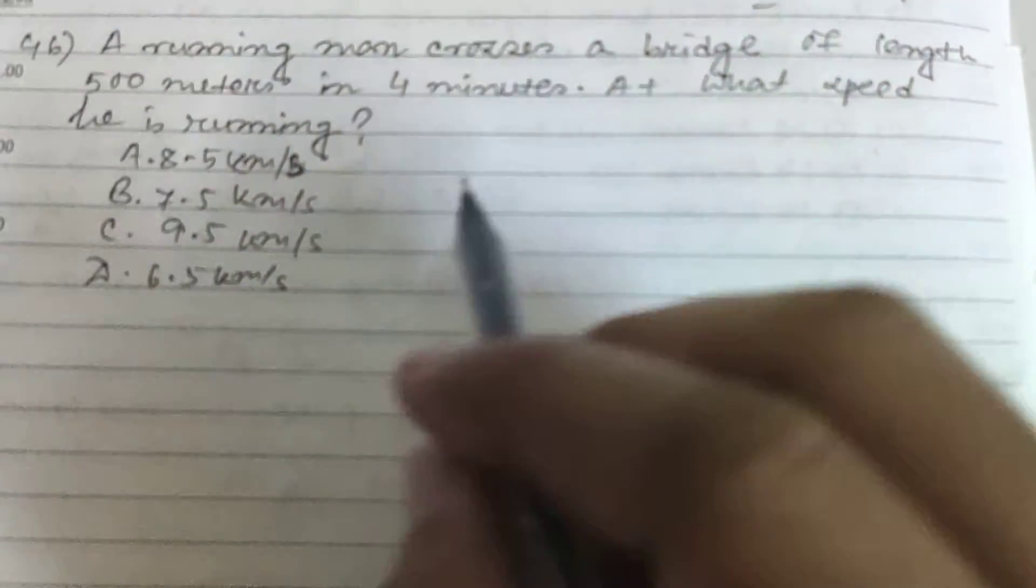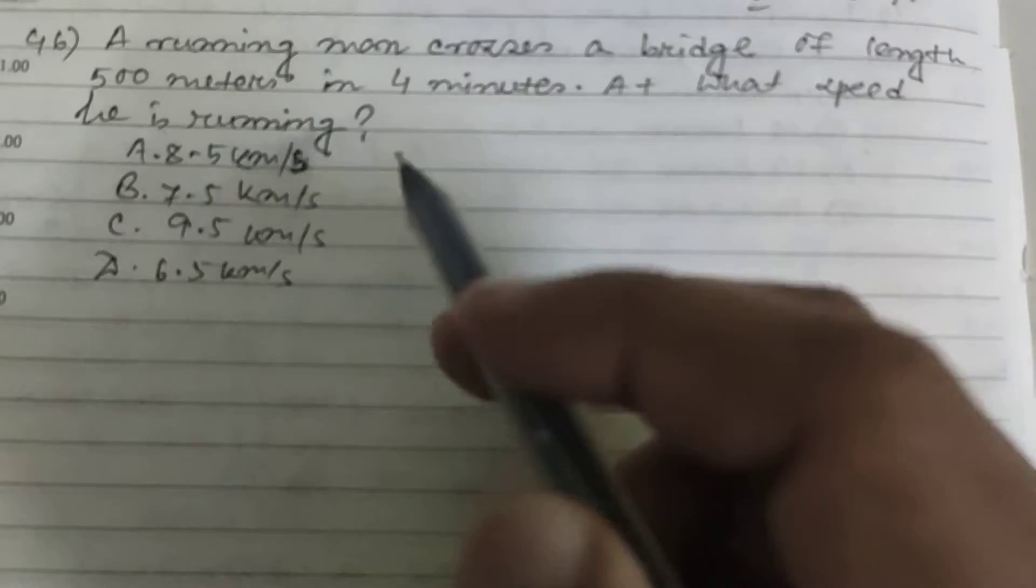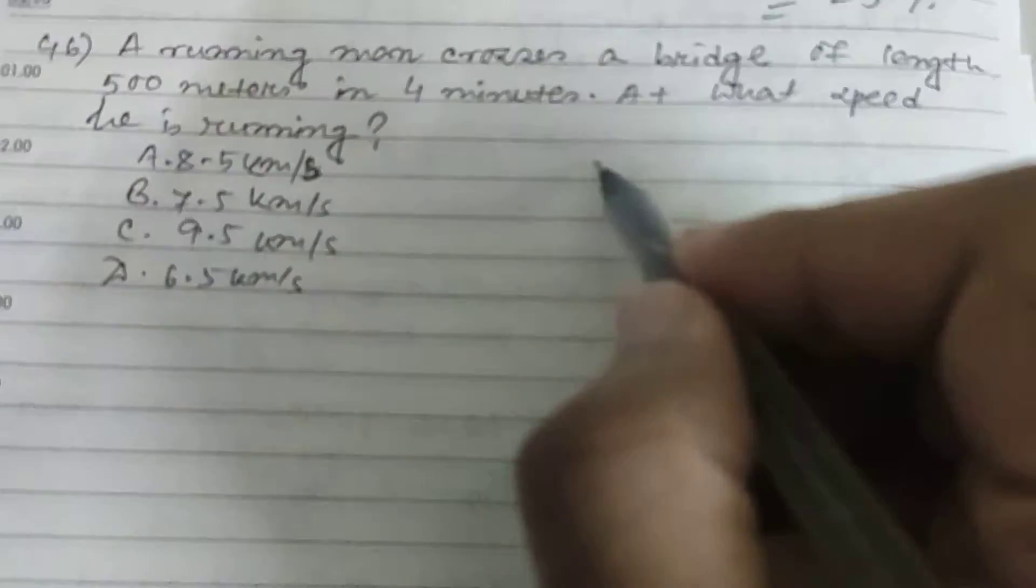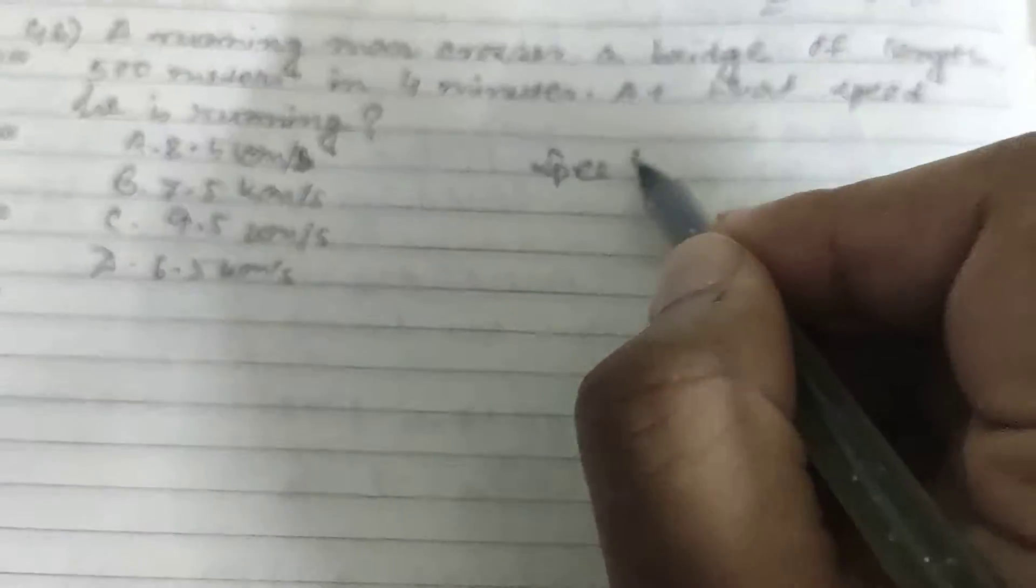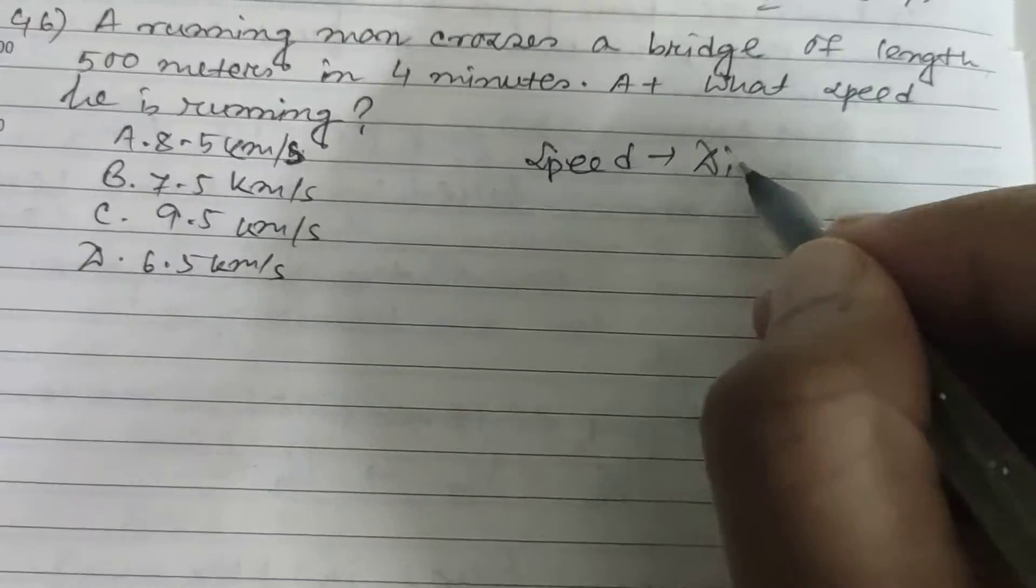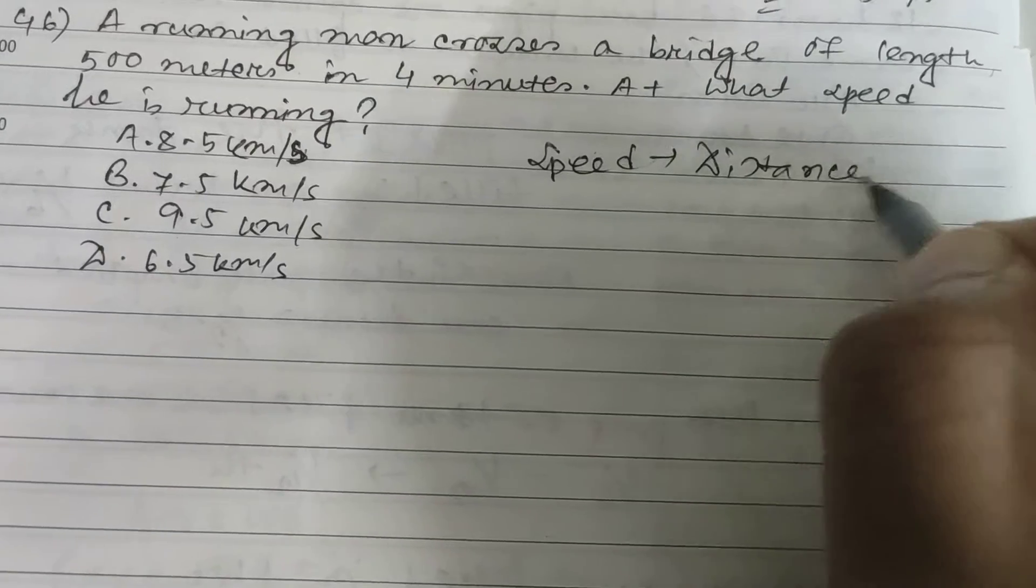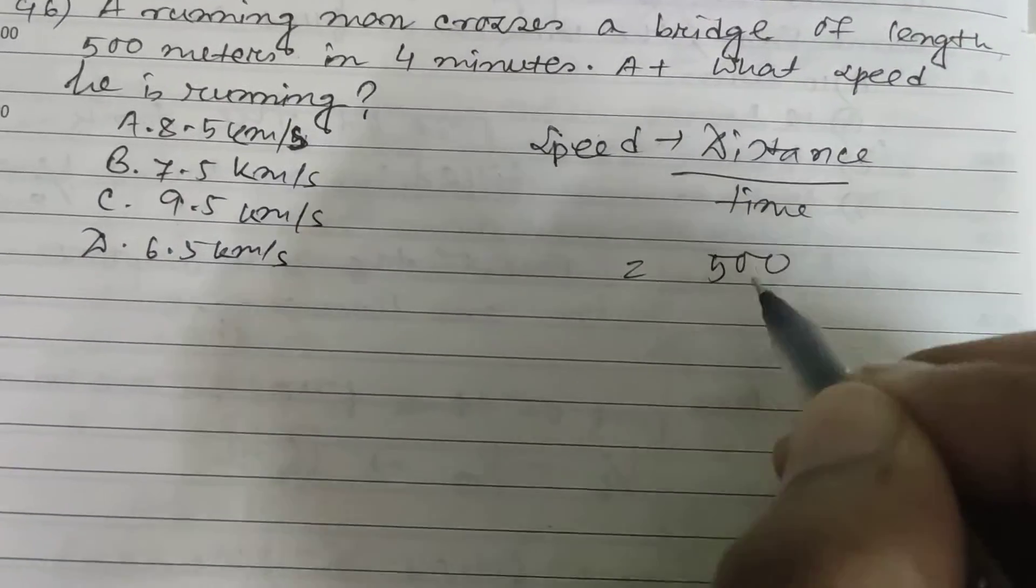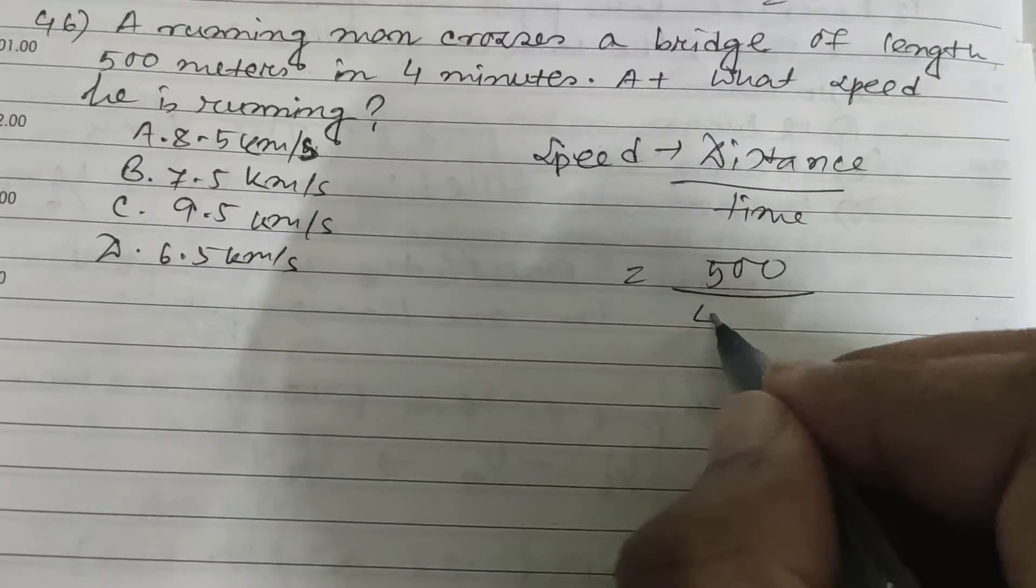The answer is in kilometers per second. You all know the formula of speed: speed is distance divided by time. So distance is 500 and time is 4 minutes.